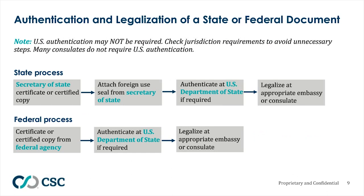Now let's walk through the flows for authentication and legalization of a state or federal document. For the state process, you start with a Secretary of State certificate or certified copy, attach a foreign use seal from the Secretary of State, send it to the U.S. Department of State for authentication, and it ends at the appropriate consulate or embassy for legalization. For the federal process, you start with a certificate or certified copy issued from a federal agency, send it to the U.S. Department of State to be authenticated, and end at the appropriate embassy or consulate for legalization.